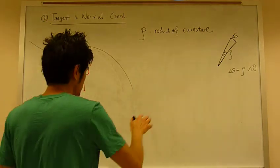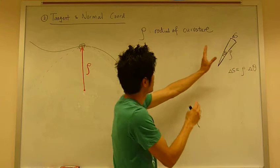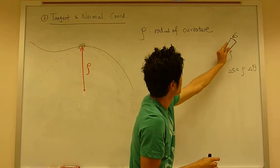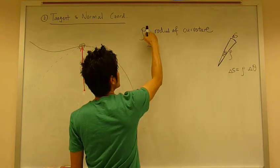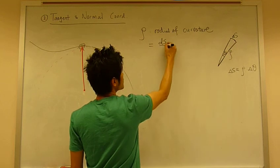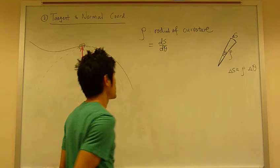So from there, you have to keep making it smaller, so it's incremental change. So rho would be ds over d theta.